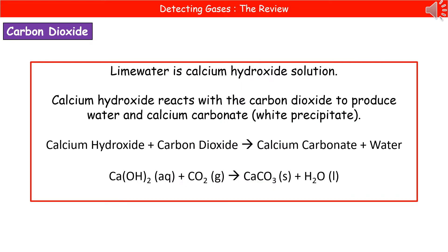Lime water is a calcium hydroxide solution. When we introduce carbon dioxide to it, a reaction occurs, producing water and calcium carbonate. The calcium carbonate is what makes the lime water go cloudy — it's a white precipitate, a white solid that floats around in the water. The word equation: calcium hydroxide + carbon dioxide → calcium carbonate + water, with the balanced symbol equation shown below.